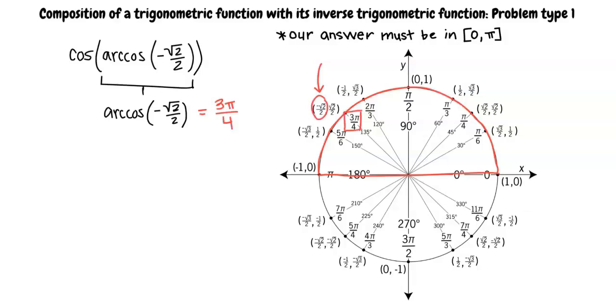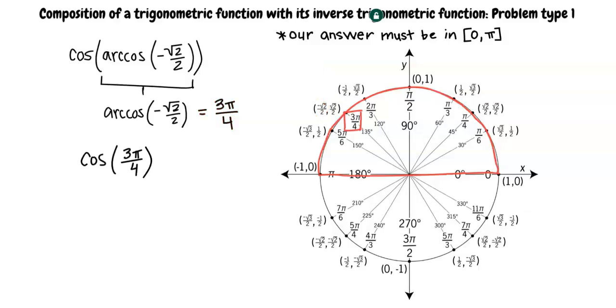Great work! So we just determined that arc cosine of negative root 2 over 2 is equal to 3 pi over 4. Now we can substitute this into the original expression and write cosine of 3 pi over 4. What is the cosine of 3 pi over 4? Because we are looking for the x value at the angle 3 pi over 4, it would be negative root 2 over 2.